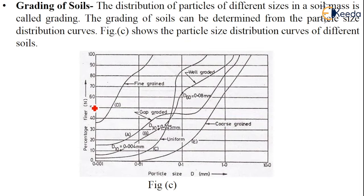How do we grade the soils? The distribution of particles of different sizes in the soil mass is called grading. The grading of soils can be determined from the particle size distribution curve. The below figure shows the particle size distribution curve of different soils like fine-grained, gap-graded, well-graded, uniform-graded, and coarse-grained.